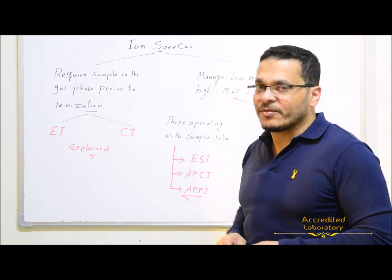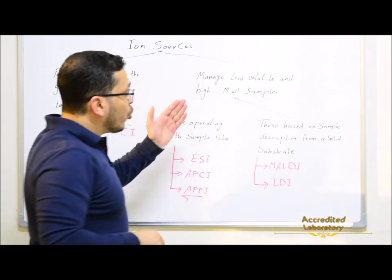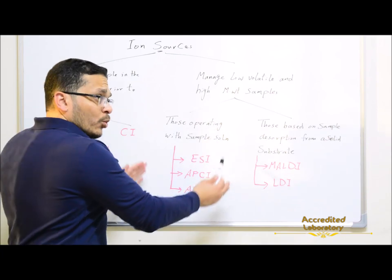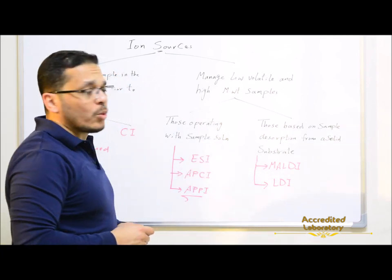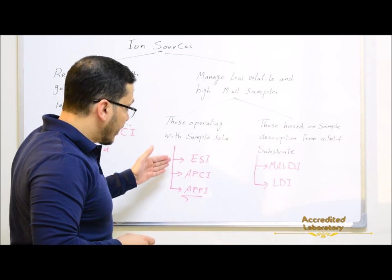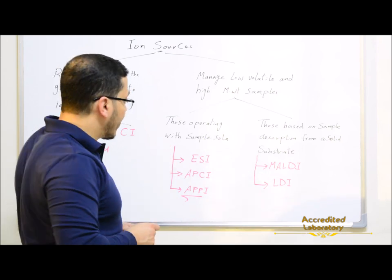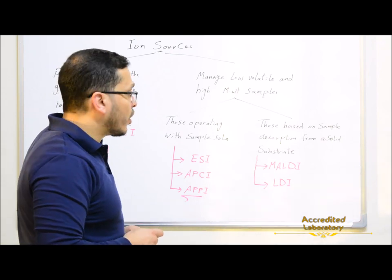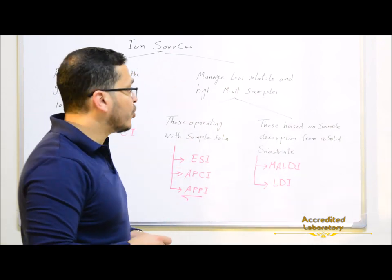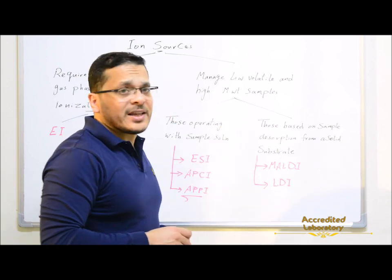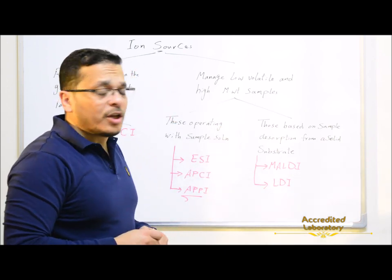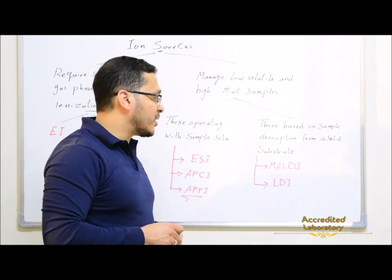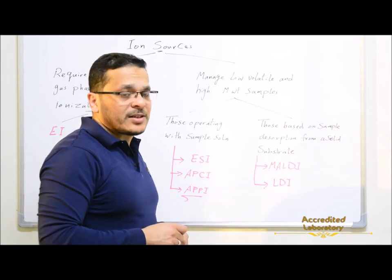These are hard ionization techniques because ionization and fragmentation occur inside the ion source. The other type manages low-volatile and high-molecular-weight samples, subdivided into those operating with sample solution like electrospray ionization, atmospheric pressure chemical ionization, and atmospheric pressure photo ionization, which will be our lecture today.